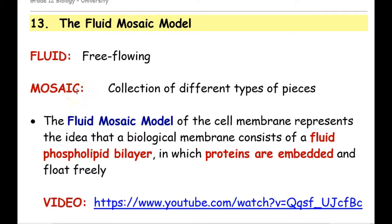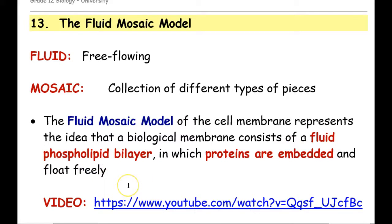Mosaic — from art class, you may remember that a mosaic can be thought of as just a collection of different types of pieces all put together. And that does describe what we know about the cell membrane. The fluid mosaic model: we have the fluid phospholipid bilayer, but we also have proteins that are embedded and can float around freely throughout that membrane. So let's just watch a quick video.